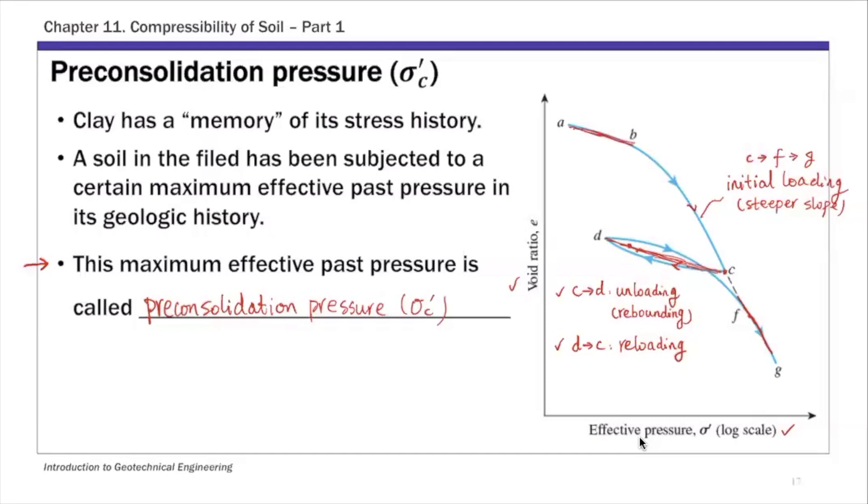So depending on the relationship between the current effective stress and this preconsolidation pressure, clay is going to follow different loading paths for the same stress increment. On this graph I showed last time, you have the initial loading which has a steeper slope, and you have this unloading and reloading portion which has a flatter slope. This basically means for the same given stress increment, the change in void ratio is going to be different depending on where the clay is on this curve.